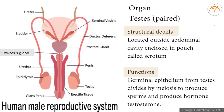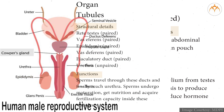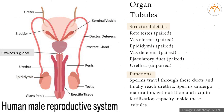Human male reproductive system: testes are located outside the abdominal cavity, enclosed in a pouch called the scrotum. Germinal epithelium from testes divides by meiosis to produce sperms and also produces the hormone testosterone. The ducts include tubules, rete testis (paired), epididymis, vas deferens (paired), ejaculatory duct (paired), and urethra (unpaired). Sperms travel through these ducts and finally reach the urethra. Sperms undergo maturation, get nutrition, and acquire fertilization capacity inside these tubules.